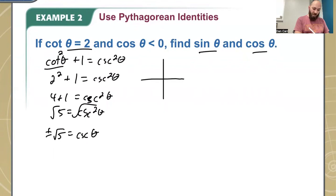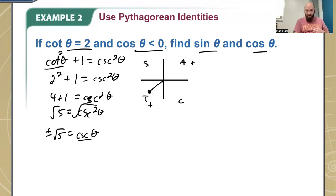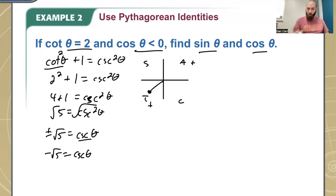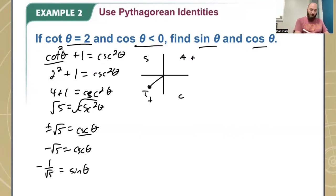To figure out the sign, I use my quadrant grid — all students take calculus. Cotangent is positive in the same quadrants as tangent, but cosine of theta is less than 0. So when cosine is negative but tangent is positive, we're in the third quadrant. That means cosecant is negative, so cosecant of theta equals negative square root of 5. Since cosecant is the reciprocal of sine, sine of theta equals negative 1 over root 5. Rationalizing by multiplying by root 5 over root 5, the sine of theta is negative square root of 5 over 5.